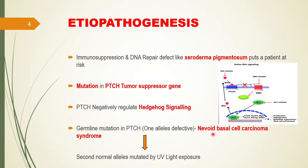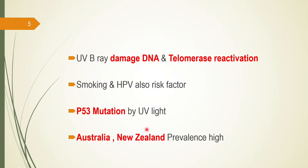If one allele is defective, it is known as naevoid basal cell carcinoma syndrome. The second normal allele will be mutated by ultraviolet light exposure. In this way there will be a homozygous defective PTCH tumor suppressor gene, which will lead to cancer development because the hedgehog signaling will not be regulated. Ultraviolet B rays exposure from sunlight can also damage our DNA and cause cell cycle dysregulation to develop the carcinoma.